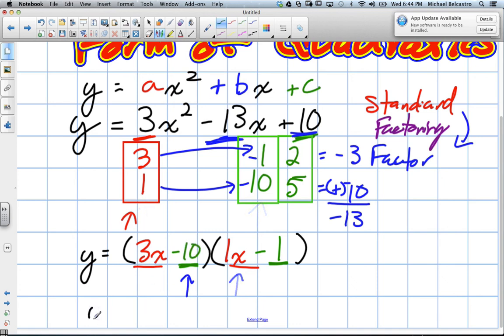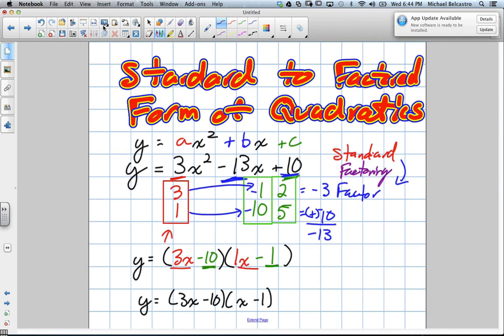So our final answer is 3x minus 10 times, and we can write this as just x minus 1. Does that process make sense?